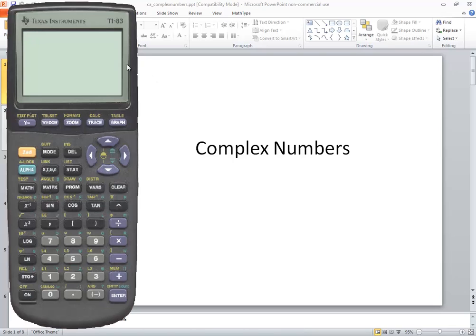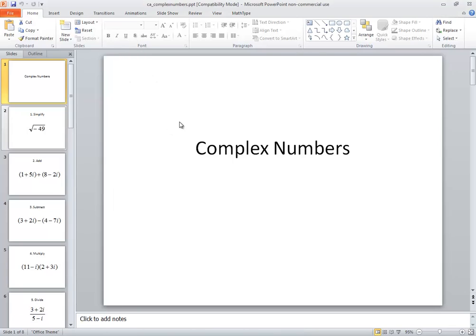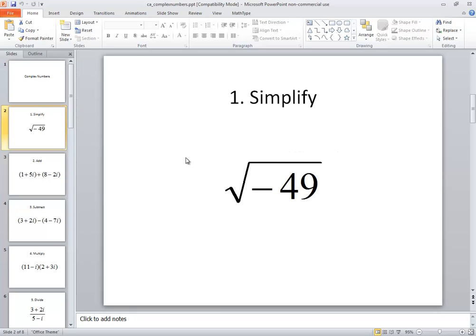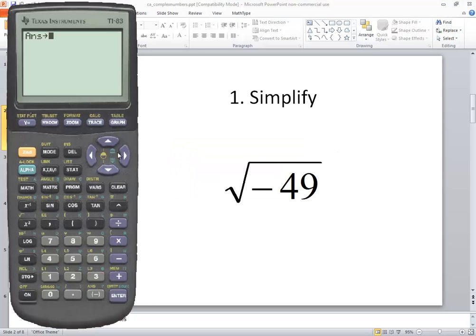Let's take a look at complex numbers on a TI-83 calculator. The first one we'll take a look at is the square root of negative 49.